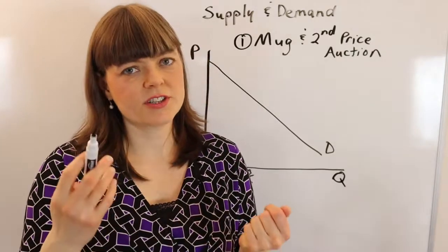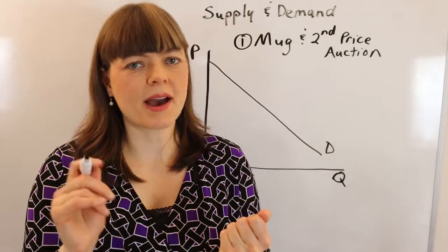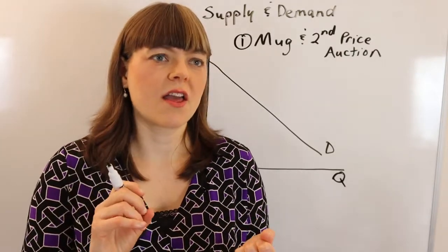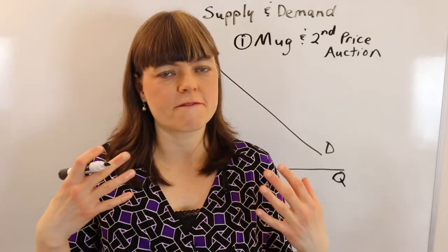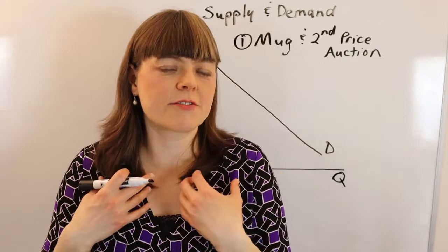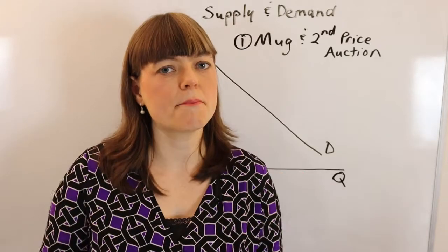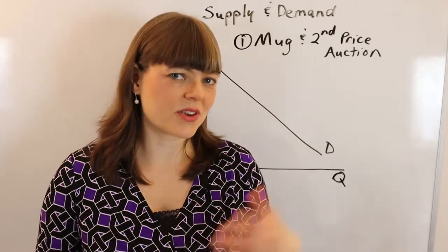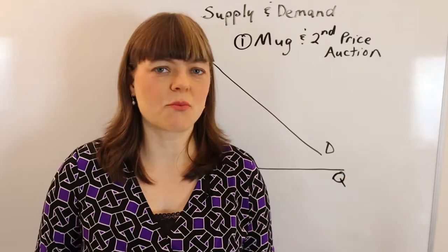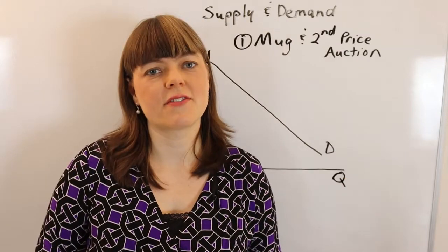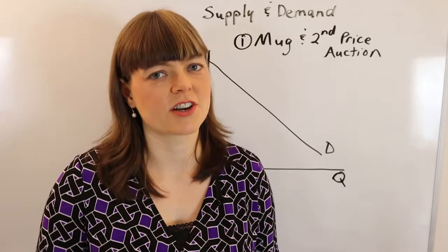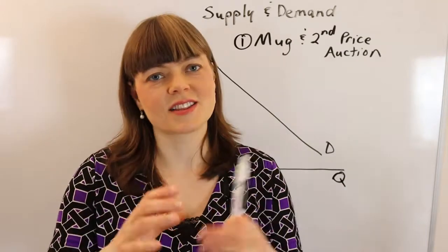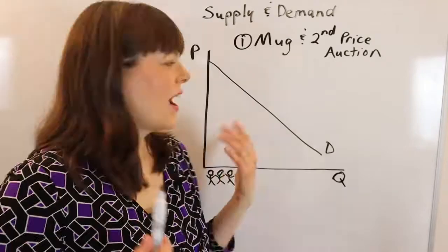You have them write their bid on a note card, then on the back they write how they came up with the bid — what factors influenced the number they put down. You can also ask them what factors might have influenced their peers' valuations.